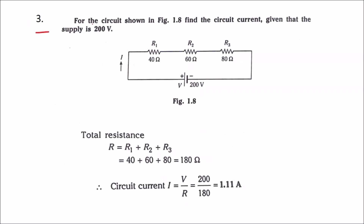Problem three: for the circuit shown in figure 1.8, find the circuit current given that the supply voltage is 200 volts. The circuit has three resistors connected in series: R1, R2, and R3. The equivalent resistance is R1 + R2 + R3 = 40 + 60 + 80 = 180 ohms. Using I = V/R, that is 200 divided by 180, the circuit current is 1.11 amps.